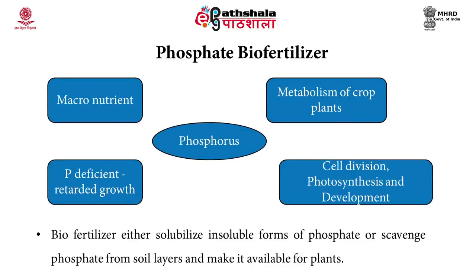Now we will discuss phosphate biofertilizers. Why is phosphorus necessary? Phosphorus is a macronutrient that helps in the metabolism of crop plants. Its major role is in cell division and photosynthesis. If a plant is phosphorus-deficient, it shows retarded growth because cell division is impaired.